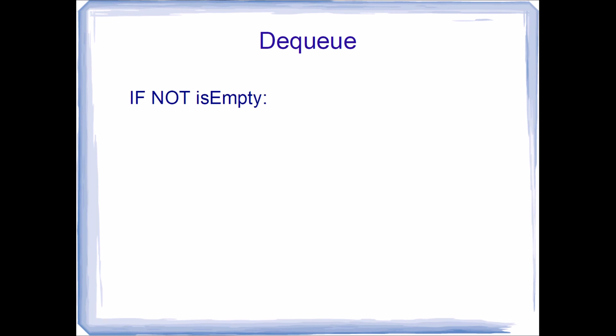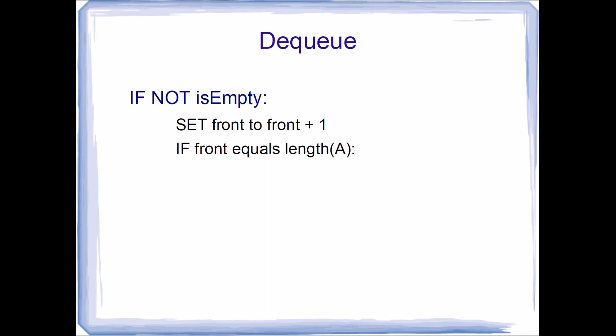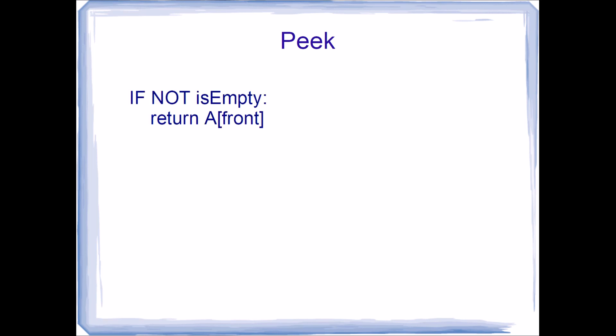For DEQUEUE, removing a value from the front of the queue: first make sure the queue is not empty, because you can't remove a value from an empty queue. If it's not empty, increment front. Using the if-statement approach for wraparound: set front to front plus one, then if front equals the length of array A, reset front to zero. For PEEK: if the queue is not empty, return a copy of A[front] — the first value in the queue.